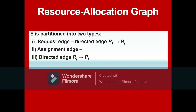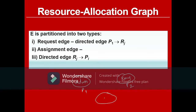Edges are also partitioned into two types: request edges and assignment edges. Using the same set of vertices — Adam as process P1, Amy as process P2, and the frying pan as resource R1 — a request edge is a directed edge from Pi to Rj. So Adam is requesting R1, meaning the edge goes from process to resource, with the resource at the head and process at the tail.